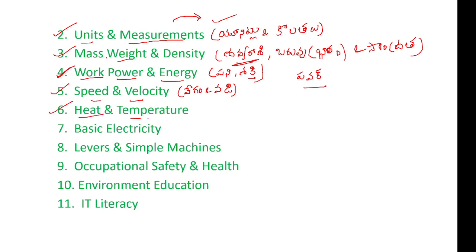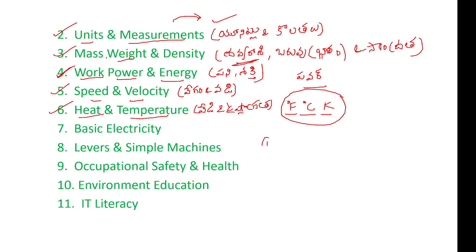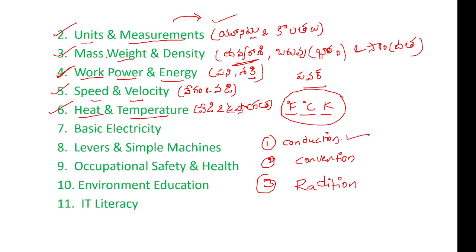Next, the sixth unit: heat and temperature. Heat and temperature are generally different. We will be able to use the three temperature scales: Fahrenheit, Celsius, and Kelvin. These three scales have inter-relations. There are three modes of heat transfer: conduction, convection, and radiation. Conduction is heat transfer through direct contact. Convection involves liquids, where random particles move and carry heat.